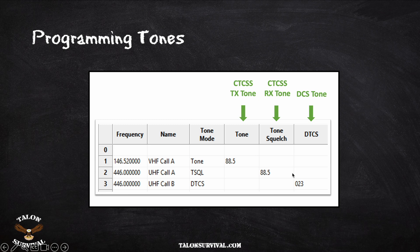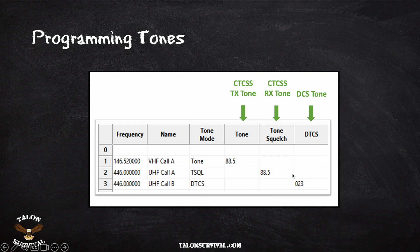Now let's look at the DCS tone. For row three, UHF call B, we're programming a digital tone — DCS 023, so code 23. As you can see, code 23 is utilized for both transmit and receive. There are options on certain radio models to use a DCS code for just transmit or just receive, but the most common use is having DCS on both sides with one setting — entered in one place for both transmit and receive.